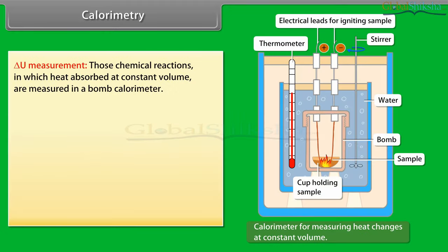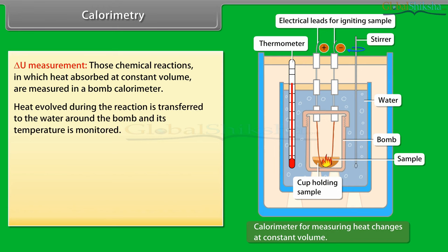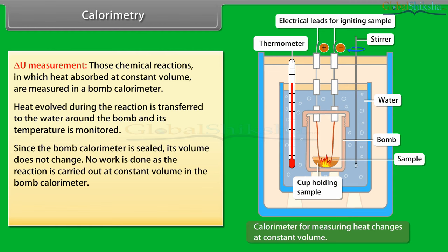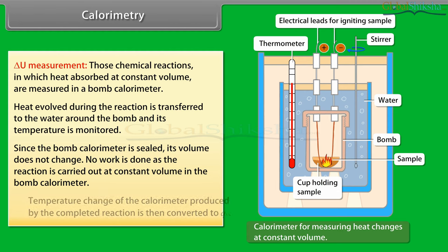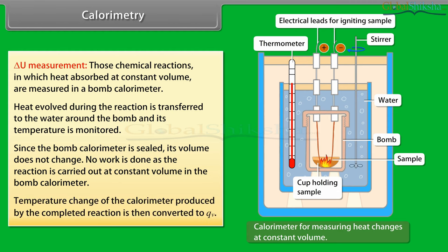ΔU measurement: chemical reactions in which heat is absorbed at constant volume are measured in a bomb calorimeter. The steel vessel is immersed in a water bath to ensure no heat is lost to the surroundings. A combustible substance is burned in pure dioxygen supplied in the steel bomb. Heat evolved during the reaction is transferred to the surrounding water and its temperature is monitored. Since the bomb calorimeter is sealed, its volume does not change; no work is done. The temperature change of the calorimeter produced by the completed reaction is then converted to Q_V.